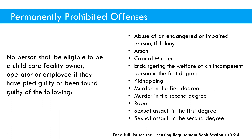There are also permanently prohibited offenses. If a person was found guilty of any of these charges — and the full list is in minimum licensing section 110 — they are not eligible no matter how many years have passed since the date of conviction. Examples include arson, capital murder, kidnapping, sexual assault, and murder. Even if it was twenty years ago, they are permanently prohibited from working in child care.